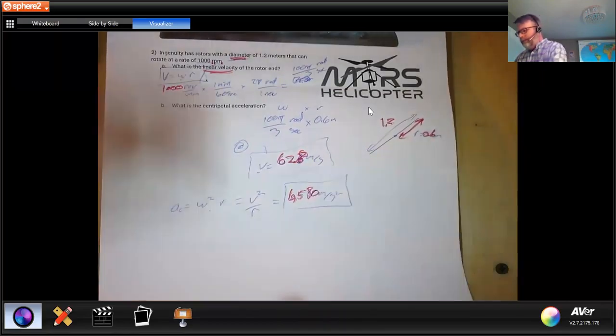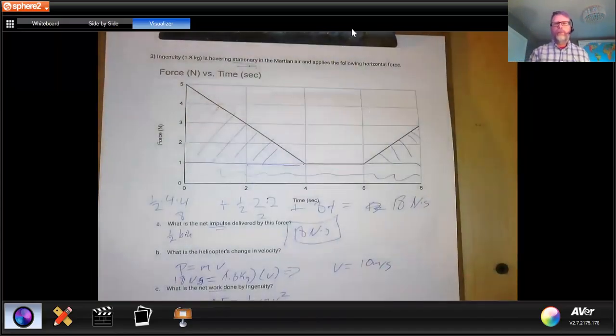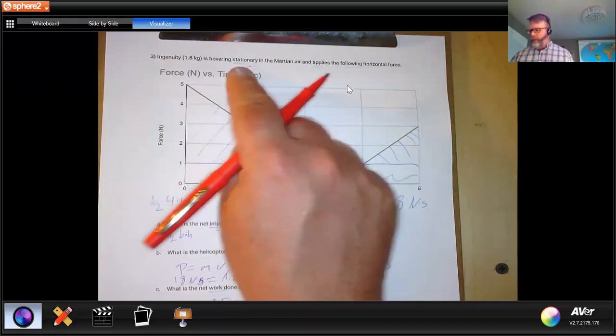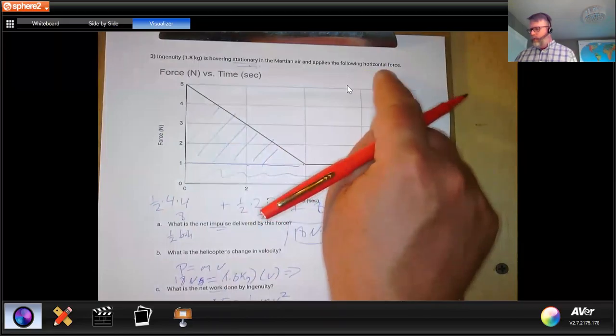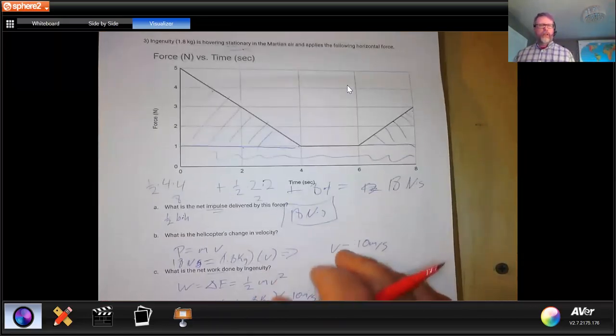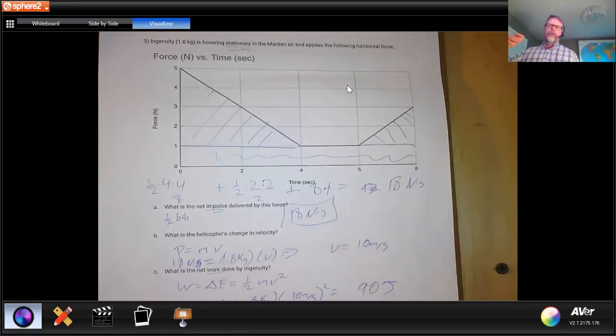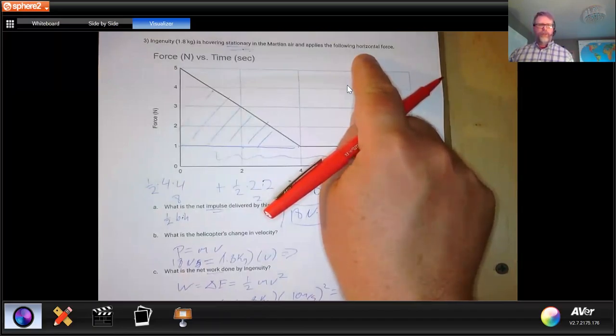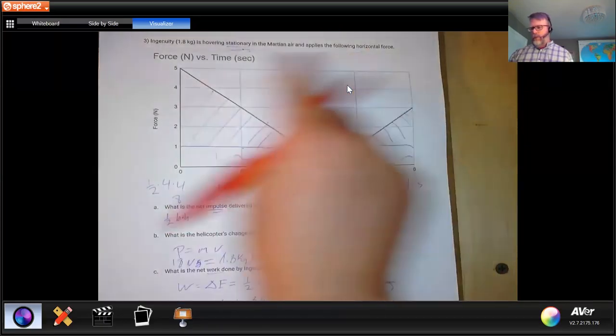So from there, we have our third one. We have the same ingenuity still on Mars. It is now hovering stationary in the Mars air and applies the following horizontal forces, by the way. So that's what NASA is trying to do. They want to go up to about a three meter height, which I'm not three meters tall, it's going to be a little bit taller than me, like ceiling height, three meters. And then they want to go horizontally back and forth for some kind of their stage two testing. So that means we don't have to worry about potential energy or forces due to gravity as we get down here. It's all going to be horizontal.